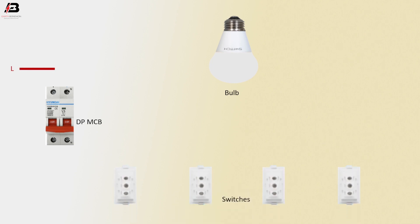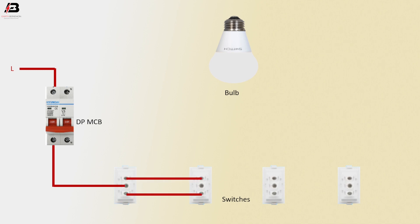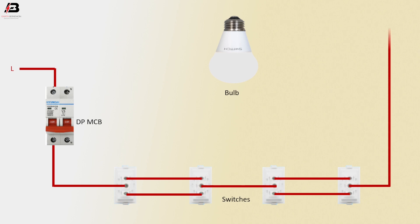Phase connection to double pole MCB phase point. Phase connection outgoing from double pole MCB to Switch1 common connection. L1 and L2 short between Switch1 and Switch2. Common connection between Switch2 and Switch3. L1 and L2 terminal connection between Switch3 and Switch4. Phase connection outgoing from Switch4 to valve phase point.